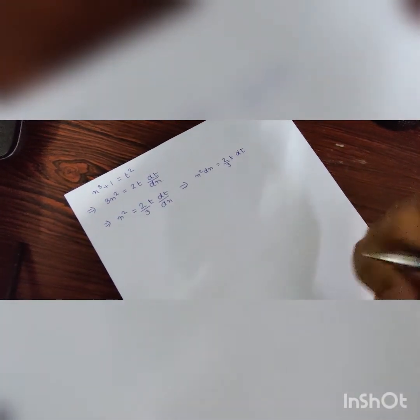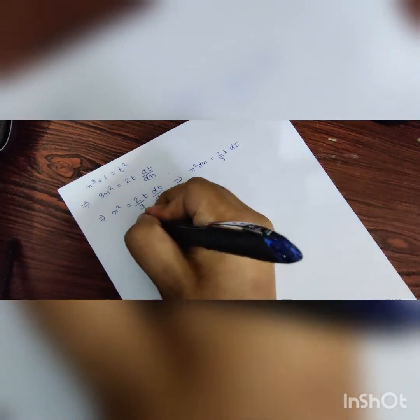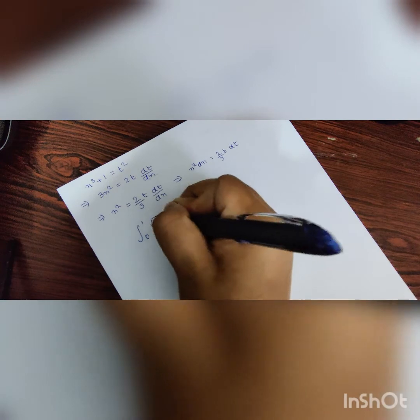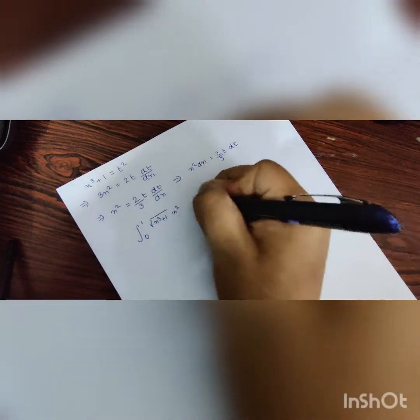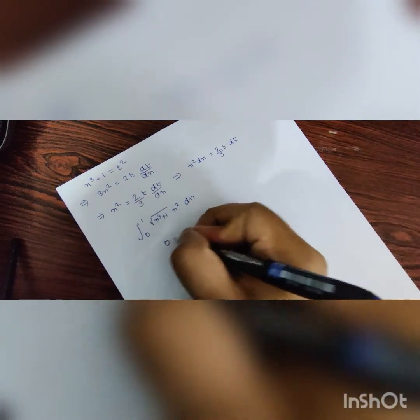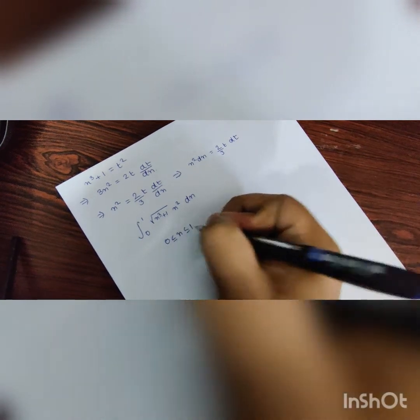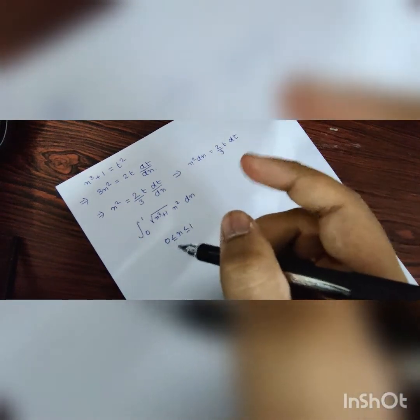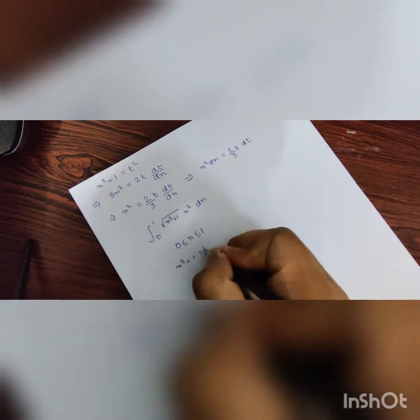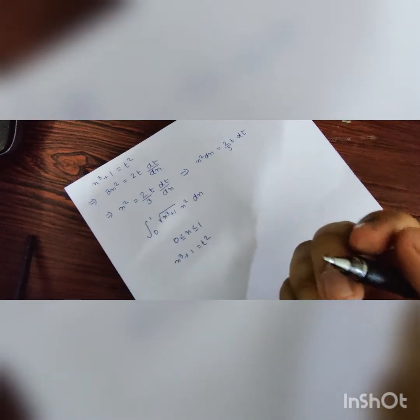Now, because I have taken a third variable, the limits again need to be changed. From our initial equation, which is x³ plus 1 x squared dx, we know that the upper limit is 1 and the lower limit is 0. So, 0 ≤ x ≤ 1.